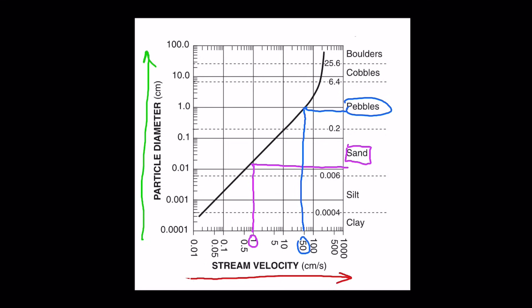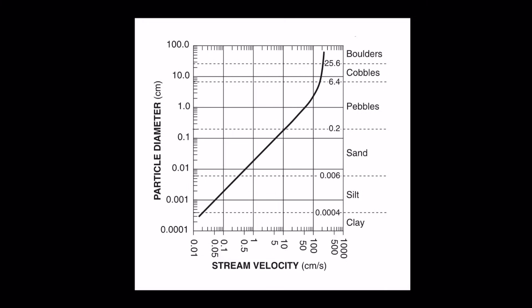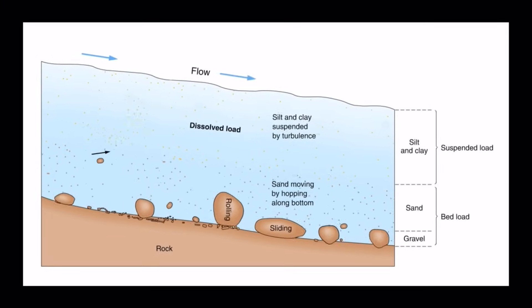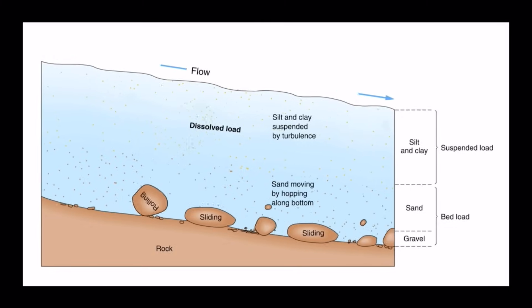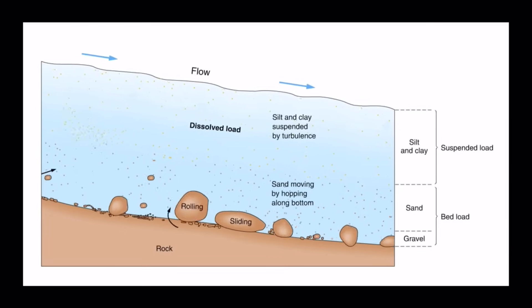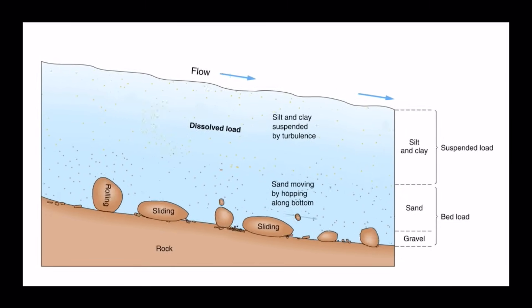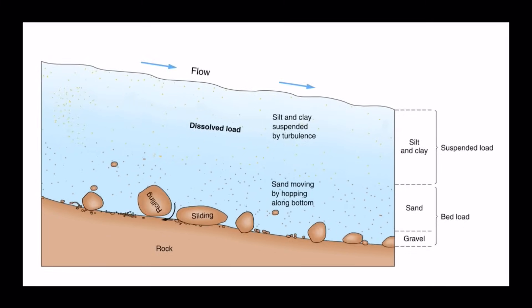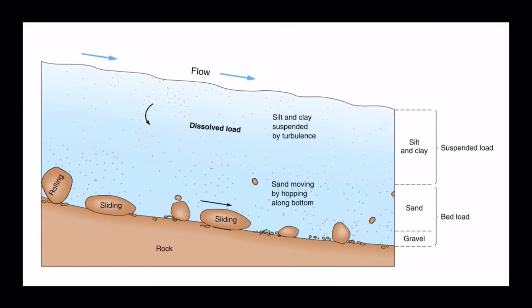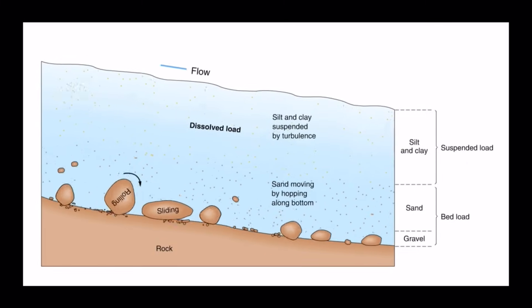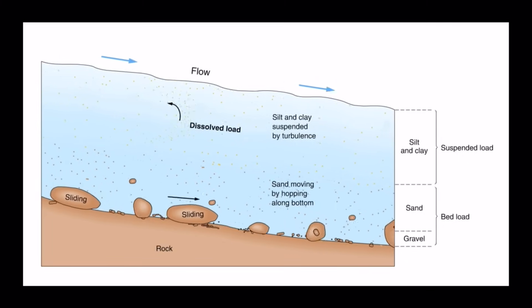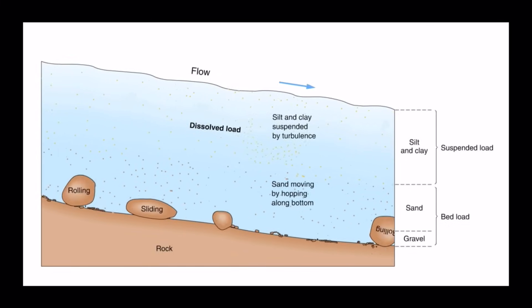Only the fastest rivers on Earth can carry the biggest sediments. Looking at how sediments move: smaller sediments like silt and clay are suspended up in the body of the water, subject to currents and velocity. Sand might be hopping or bouncing along the bottom. Bigger sediments — gravel, pebbles, and possibly cobbles — slide, roll, and bounce along the stream bed. Massive amounts of sediment are eroded by rivers, especially fast-flowing, younger rivers.